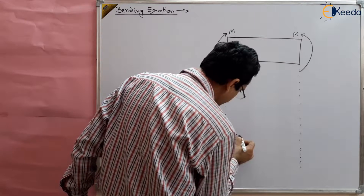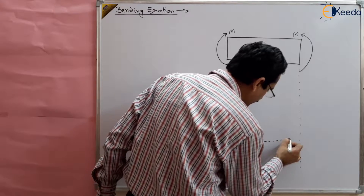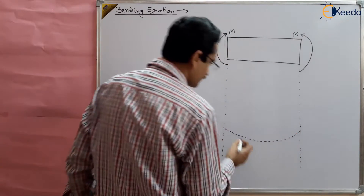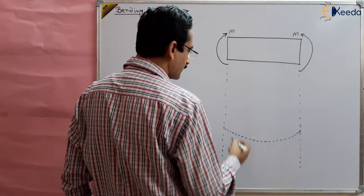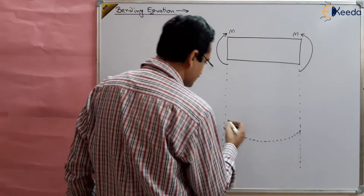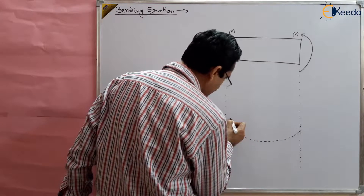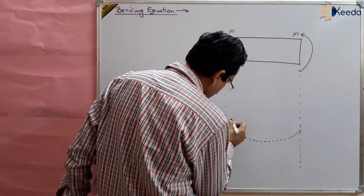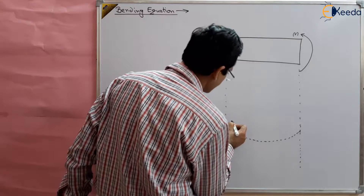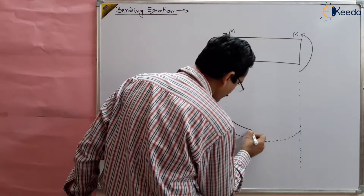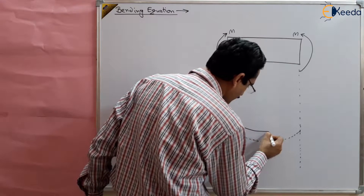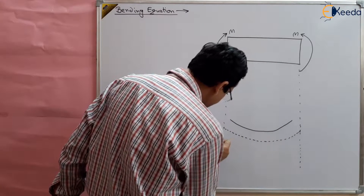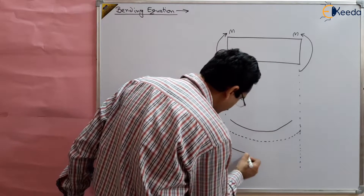This is the neutral layer. The length of the neutral layer remains the same. There is some decrease in the length of the outer fiber and there is an increase in the length of the lower fiber.